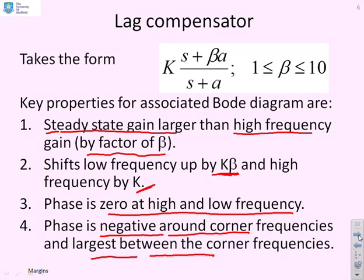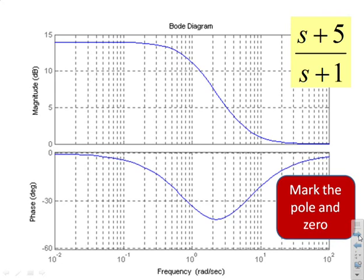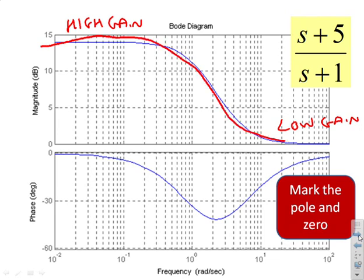So let's show another plot, just so you can reinforce that. This is a different lag compensator, but you'll see it's got the same characteristic shape. You'll see we've got high gain at low frequency and low gain at high frequency. So you have this classic drop-off where you start high, and then around the corner frequencies, you drop down, and then you become low. So that's classic for a lag compensator.